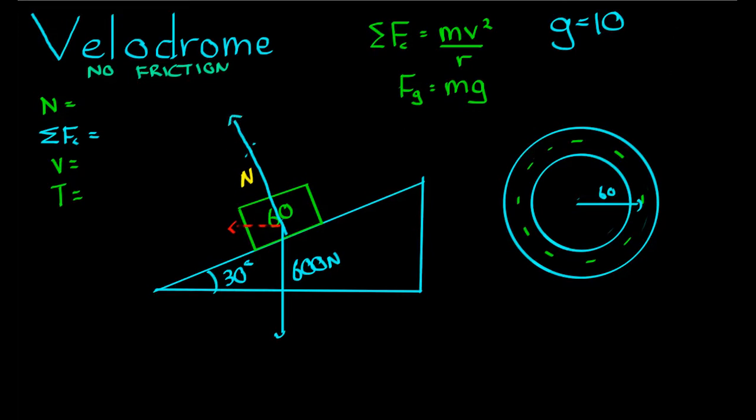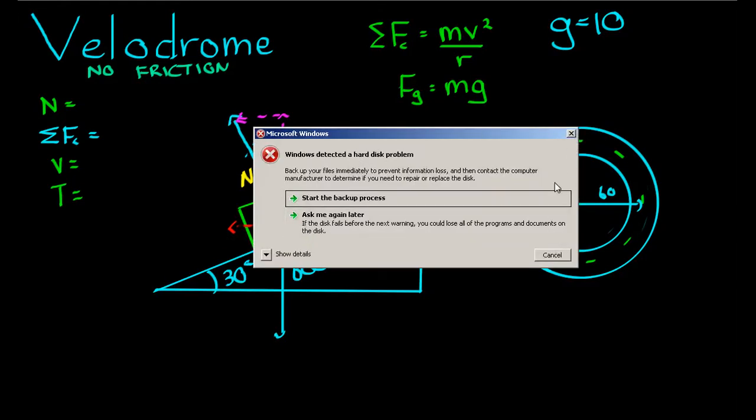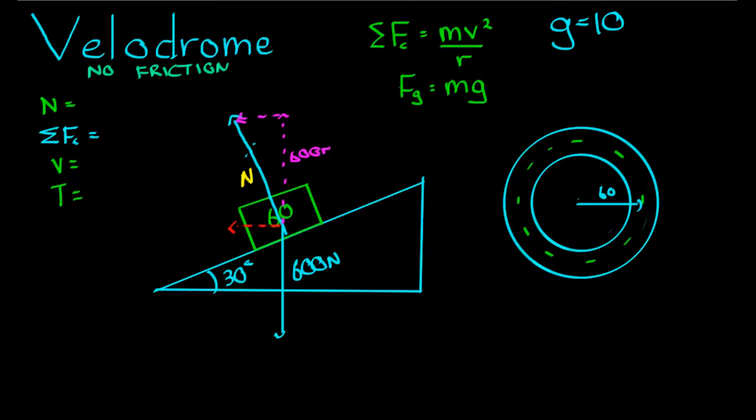That normal force has two components: a vertical component and a horizontal component. You can now see that this part of the normal force has to cancel out with the gravity force. And the horizontal component of the normal force is what actually ends up supplying the centripetal force, the force pointing towards the center of that green circle. So if that component of the normal force has to cancel out the gravity force, it has to equal 600 newtons in the vertical direction. We also know that this angle has to equal 30 degrees.